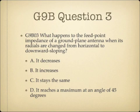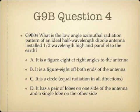Question 3: What happens to the feed point impedance of a ground plane antenna when its radials are changed from horizontal to downward sloping? A. It decreases. B. It increases. C. It stays the same. Or D. It reaches a maximum at an angle of 45 degrees. Question 4: What is the low angle azimuth radiation pattern of an ideal half wavelength dipole antenna installed one half wavelength high and parallel to the earth? A. It is a figure 8 at right angles to the antenna. B. It is a figure 8 off both ends of the antenna. C. It is a circle — equal radiation in all directions. Or D. It has a pair of lobes on one side of the antenna and a single lobe on the other side.